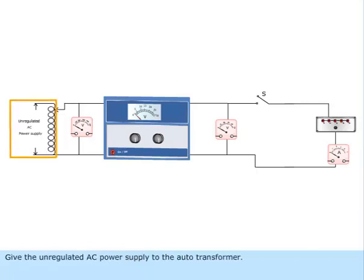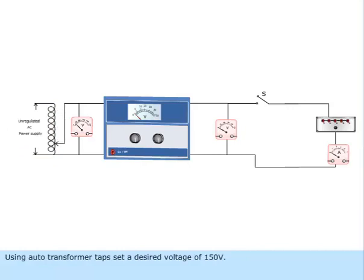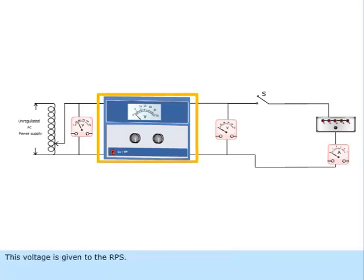Give the unregulated AC power supply to the auto transformer. Using auto transformer taps, set a desired voltage of 150 volts. This voltage is given to the RPS.